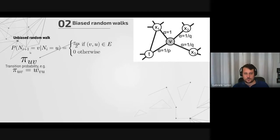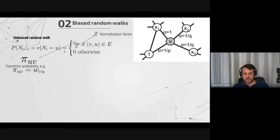This is the definition of the transition function for an unbiased random walk. Assuming the current node is u, the probability of transitioning to node v is zero if there is no connecting edge. Otherwise it is defined as a ratio: an unnormalized transition probability — which can be the edge weight, or one for unweighted graphs — divided by a normalization factor z so that probabilities sum to one.